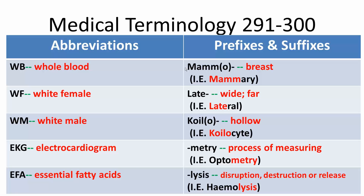Mammo means breast, so mammary means relating to the breast. Lat means wide or far, and lateral means — in anatomy — it relates to the region of the body that is farthest from the median plane.